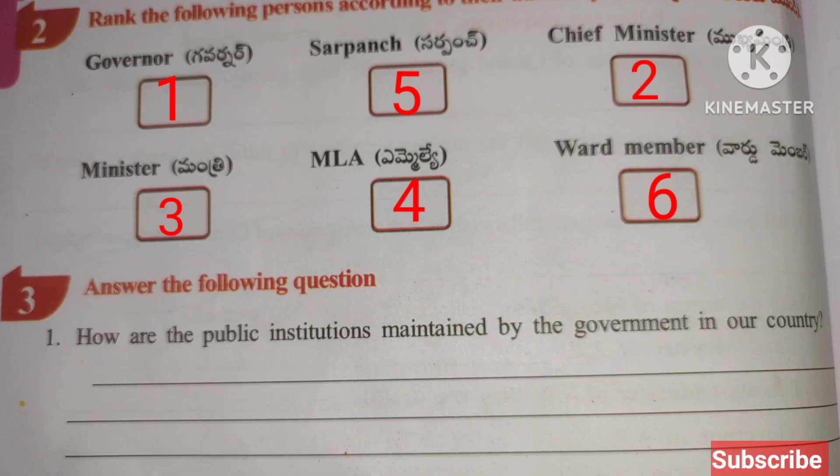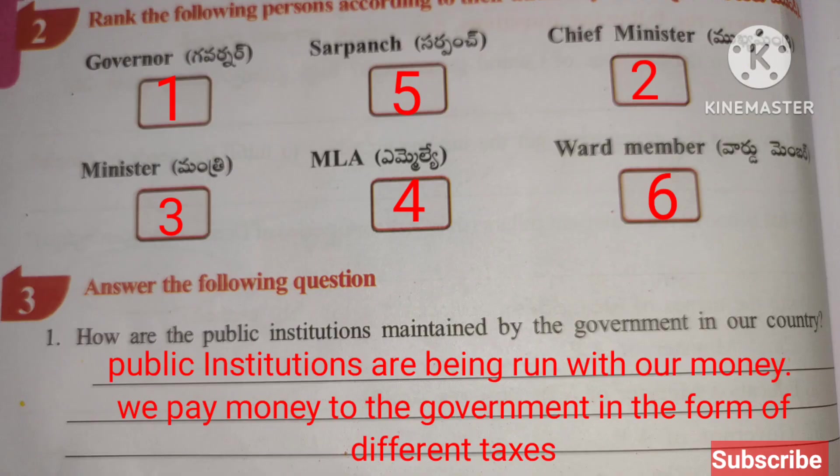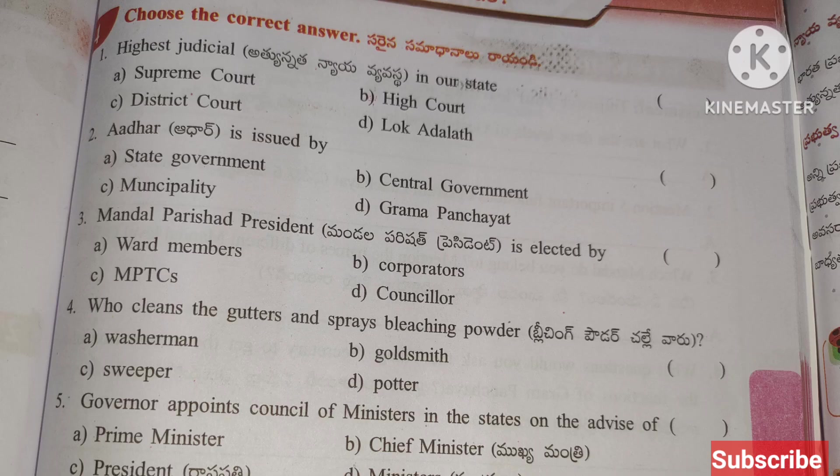Answer the following question: How are the public institutions maintained by the government in our country? Public institutions are being run with our money. We pay money to the government in the form of different taxes.